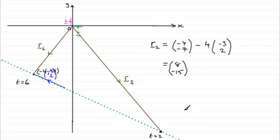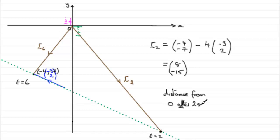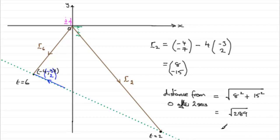Now we've got to get this distance from the origin. To find the magnitude of a vector we apply Pythagoras' theorem — we think of this as eight units across and fifteen units down. The distance from O after two seconds equals the square root of eight squared plus fifteen squared. The minus sign just tells us it's gone down fifteen units, so the length is fifteen. That gives us the square root of two hundred and eighty-nine, which is exactly seventeen. The units are in metres.